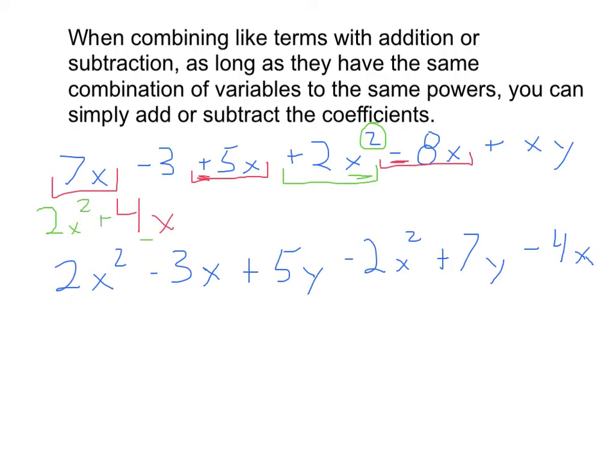So we would typically write this as 2x squared first, and then since this 4x was positive, we'll write plus. If you didn't do that already, then you can wait till you get your final answer and then fix it later. Next, we have a positive xy and there's nothing to add with that, so we're going to do plus xy.